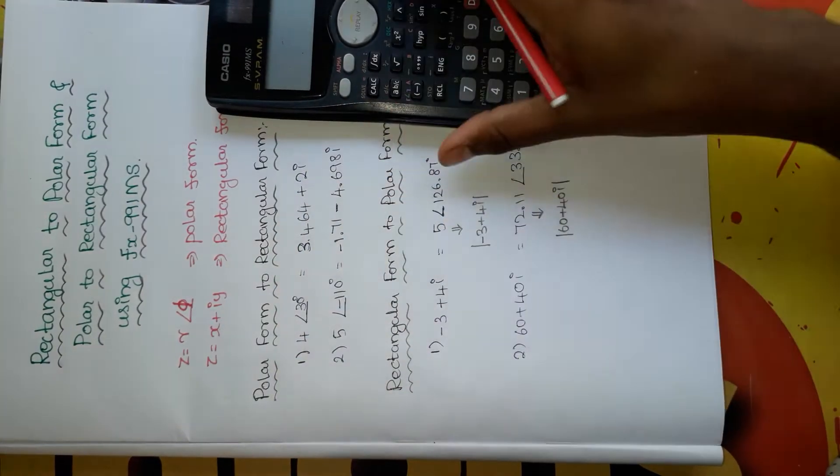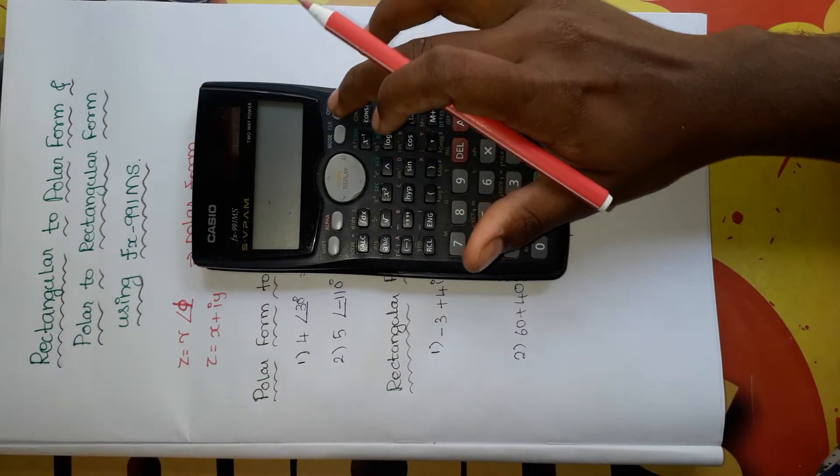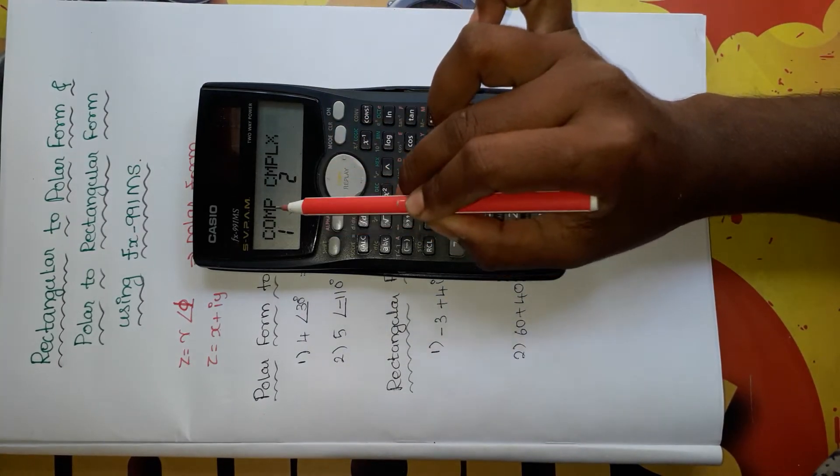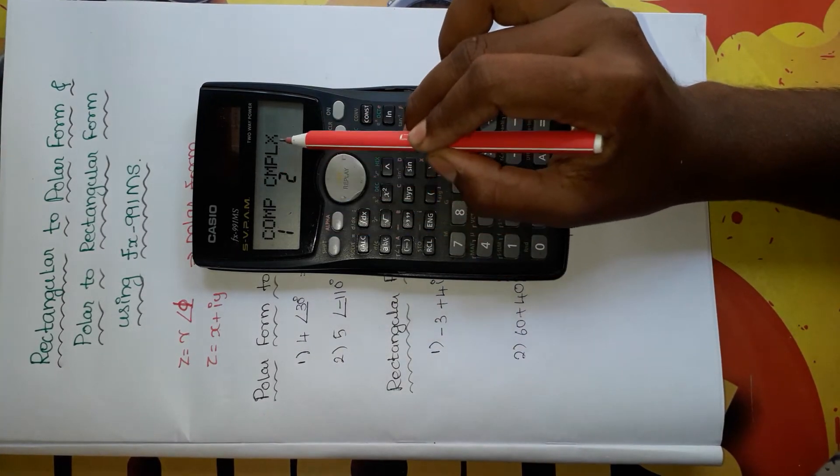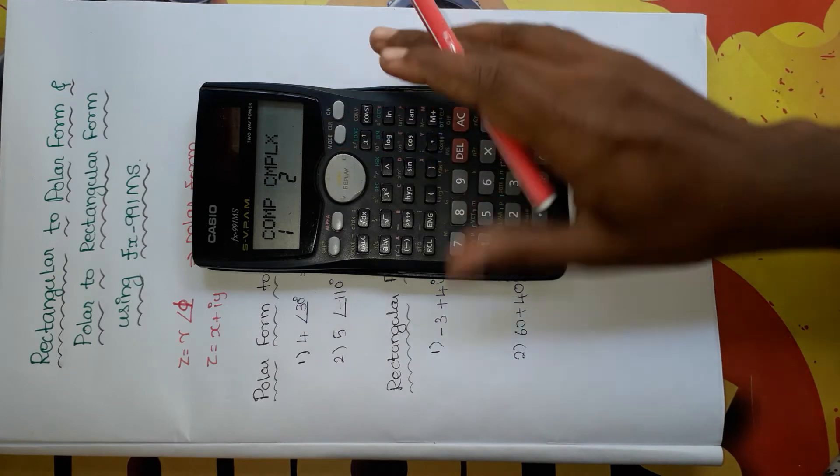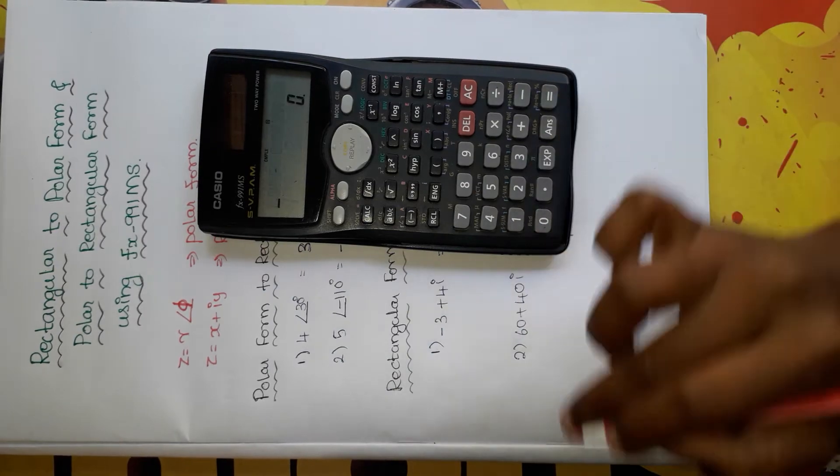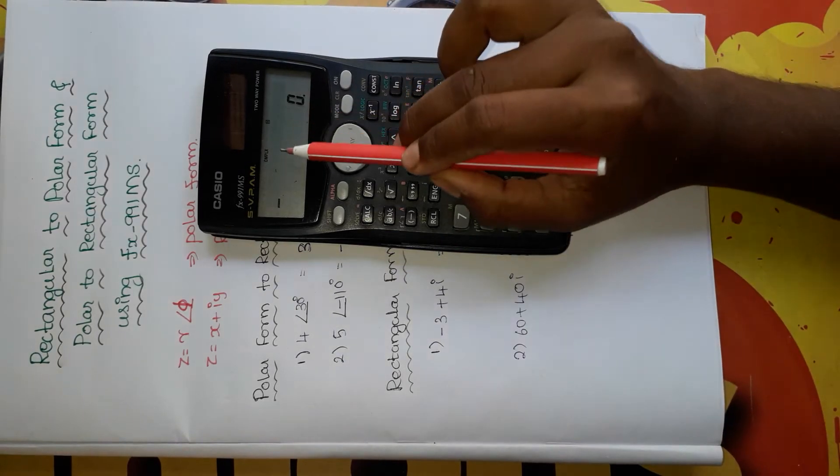First we will see how to convert polar form to rectangular form. For that, first turn on the calculator, then press the mode button. You can see COMP and CMPLX, which means complex number. Since we are working with complex numbers, just press 2. Now you can see the calculator is in complex mode.